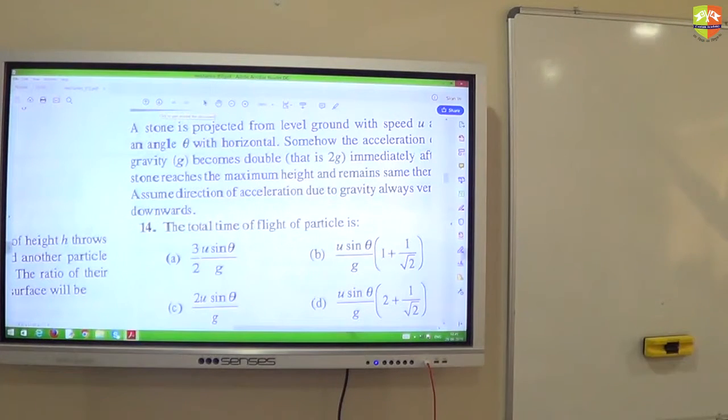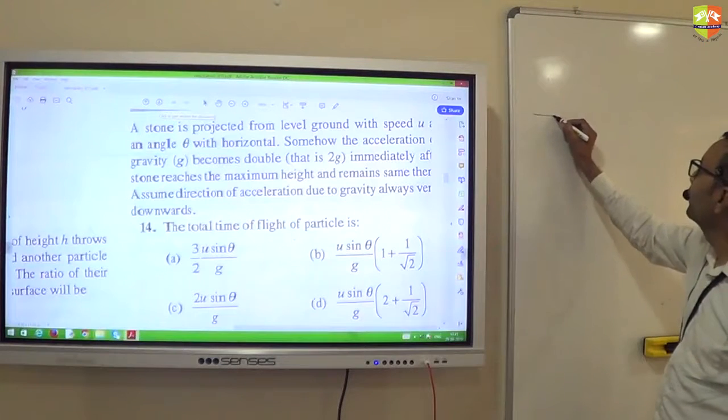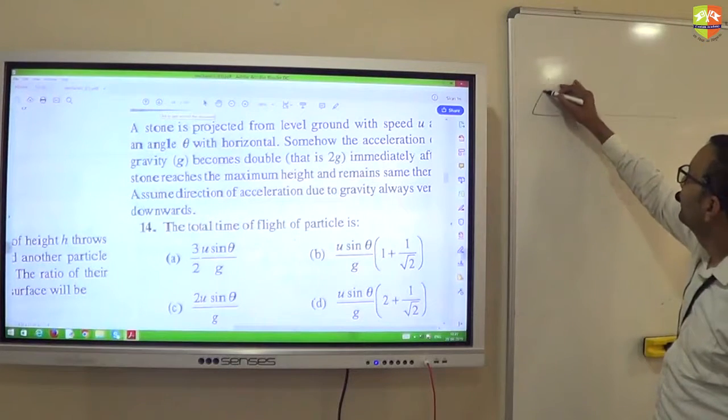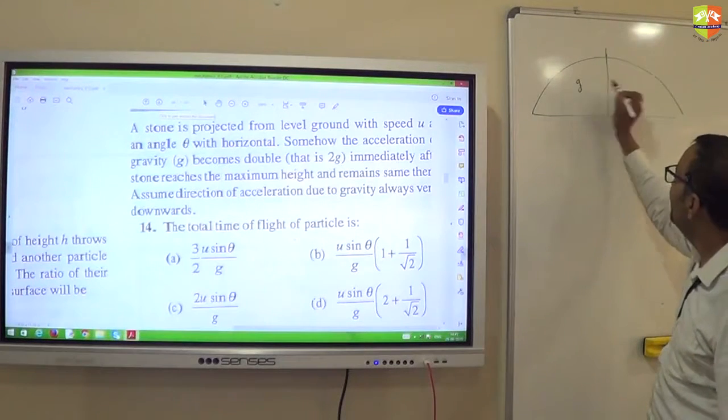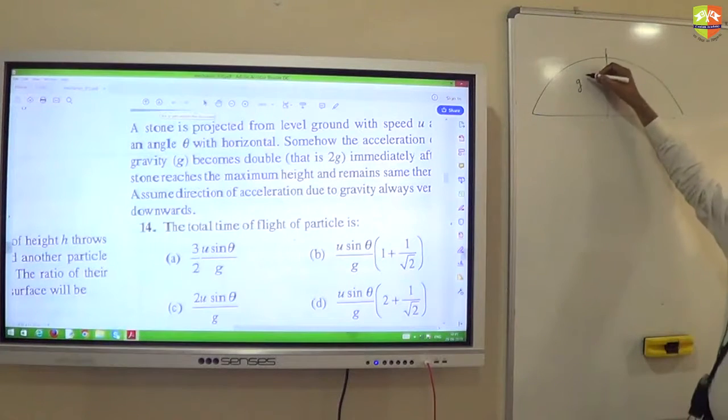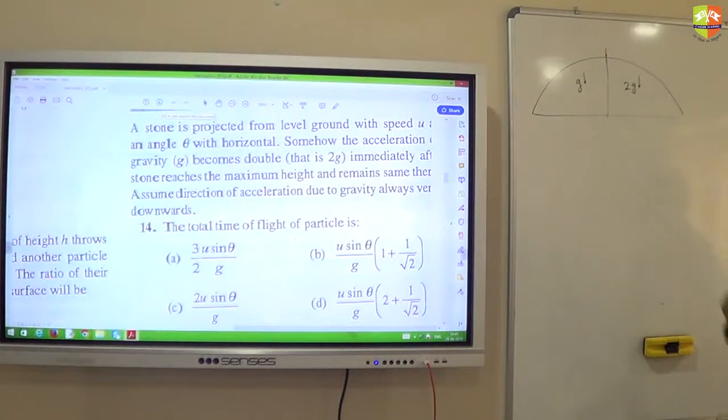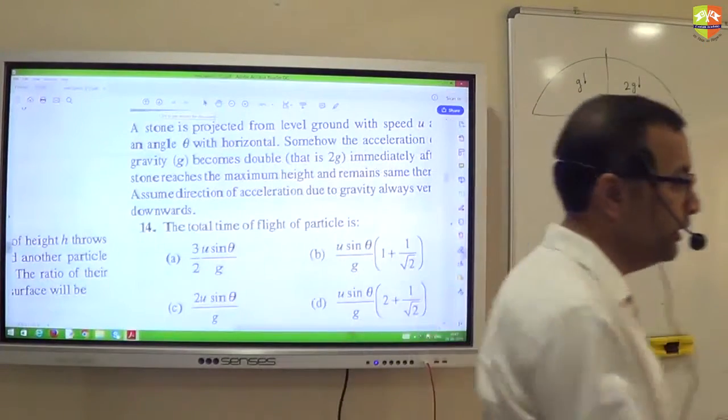After the stone reaches a maximum height, acceleration due to gravity becomes 2G. How will it look? I'm just finding it. This is the projectile I suppose. At the highest, till this point, acceleration is G and here it is 2G and vertically down. You can split the motion into two parts. So find T1 and T2 and add them up.